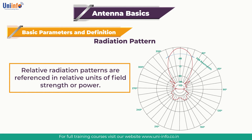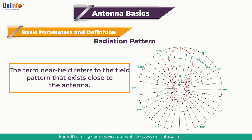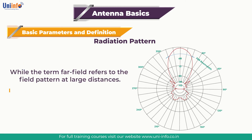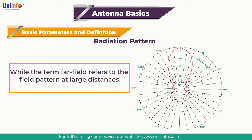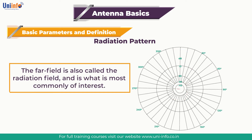The radiation pattern in the region close to the antenna is not the same as the pattern at large distances. The term near field refers to the field pattern that exists close to the antenna, while the term far field refers to the field pattern at large distances. The far field is also called the radiation field and is what is most commonly of interest. Ordinarily, it is the radiated power that is of interest, so antenna patterns are usually measured in the far field region. For pattern measurement, it is important to choose a distance sufficiently large to be in the far field, well out of the near field.